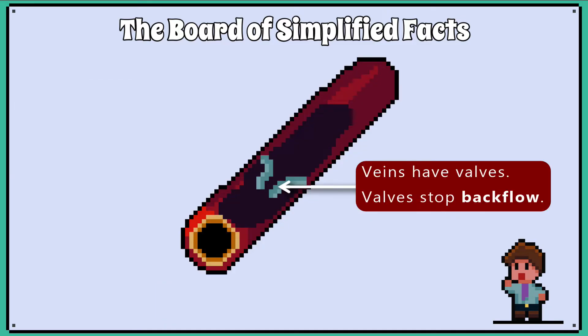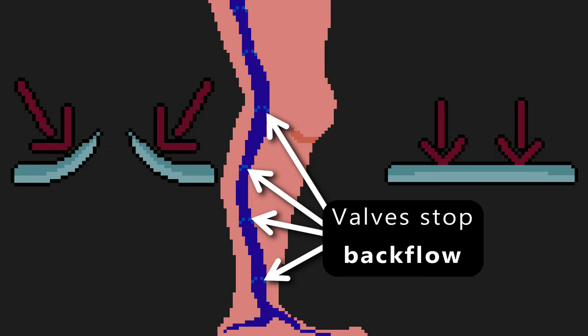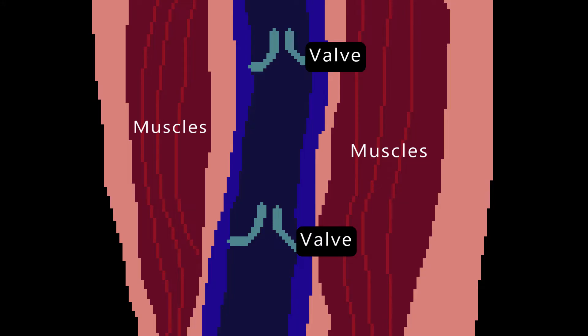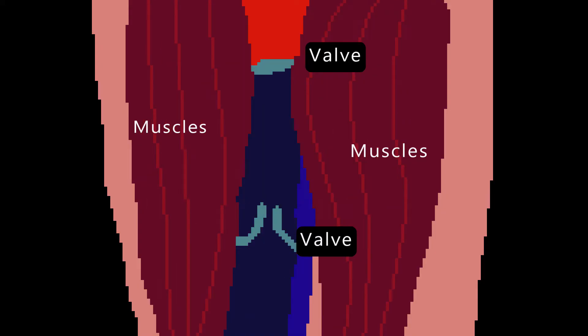Veins also contain valves to reduce backflow. For example, in your legs the veins need to get blood to travel against gravity and back to the heart — all this with a much lower pressure — so the valves help to keep blood flowing back to the heart. Muscle contraction in the legs also helps to keep blood moving by applying pressure to the veins and squeezing the blood upwards.